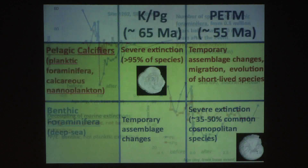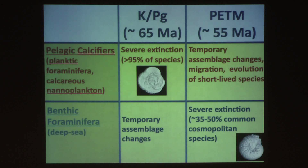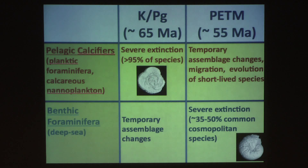And so, if you put this on a simplified plot: if you look at the Paleocene calcifiers such as planktic forams and coccolith nanoplankton, this shows severe extinction at the end of the Cretaceous, whereas in the benthic forams you see something like temporary assemblage changes, but there is no significant extinction in the deep sea. If I look at the Paleocene-Eocene maximum, then it's kind of the reverse — there's a Paleocene calcifier showing temporary assemblage changes, migration, some evolution of short-lived species, but we have a severe extinction, particularly of common and cosmopolitan species in deep sea benthic forams. What we essentially see is a decoupling in the extinction of calcifiers in the planktic waters and in the deep sea.